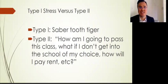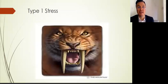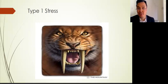The type one is that saber tooth tiger. The type two are the constant worry. How am I going to pass this class? What if I don't get into the school of my choice? How will I pay rent? And the list goes on and on. So that type one stress, you see the saber tooth tiger jumping out at you, right?